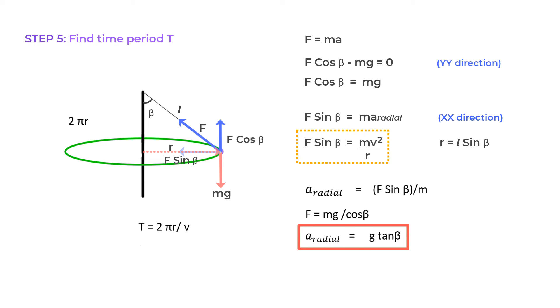But from this equation, we get V equals the square root of R F sin beta upon M. And if we substitute the value of F as MG upon cos beta from this equation, what we get is V equals the square root of GR tan beta.